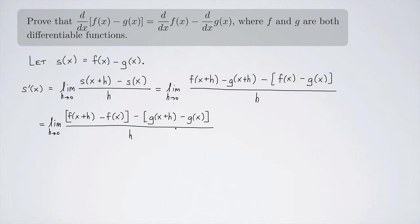I'm just grouping it in this way because I know what's coming here. I want to be able to separate this so that it looks like the derivative of f minus the derivative of g, which I think you can now do. So we have the limit as h approaches 0 of f of x plus h minus f of x all over h minus the limit as h approaches 0 of g of x plus h minus g of x all over h.